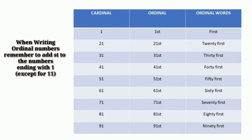When writing ordinal numbers, remember to add s-t to the numbers ending with 1 except for 11. In our example, we have 1st, 21st, 31st,